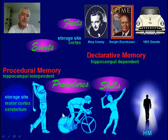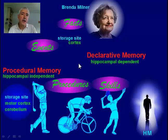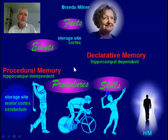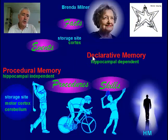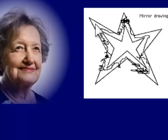I want to introduce Brenda Milner — she is the woman who first showed that we have these two very different memory systems, and she demonstrated it through work with H.M. This is a reasonably recent picture of her; she is actually 94 years old and still conducting research into learning and memory. Brenda Milner showed these two systems using a method called mirror drawing — a procedural skill where you take a pencil and draw between two stars while viewing your hand through a mirror, making it far more complex.